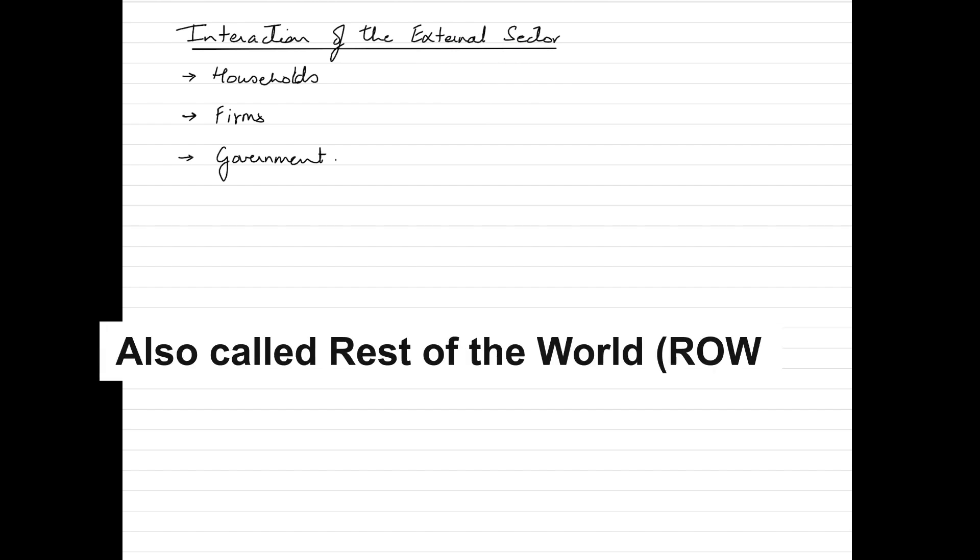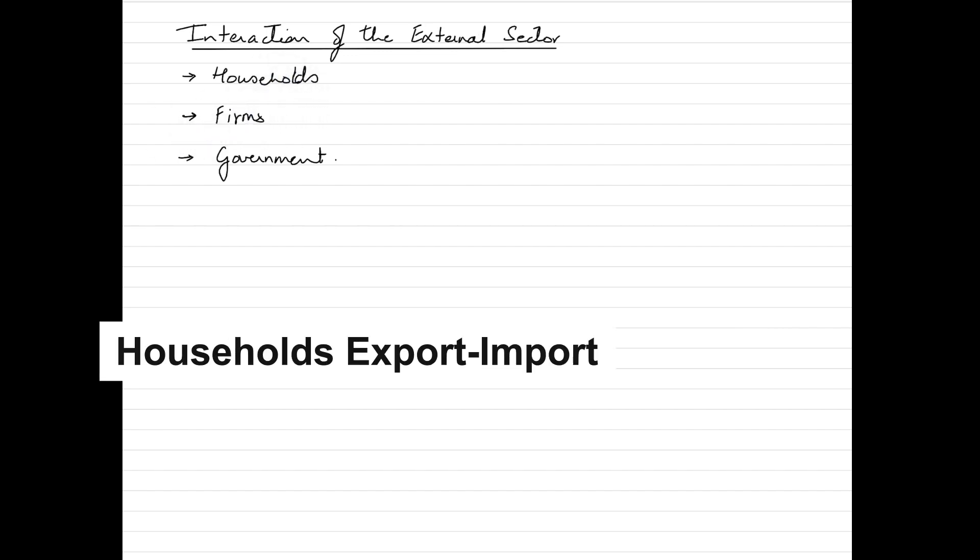The external sector is also referred to as the rest of the world. Households interact with the foreign sector by exporting and importing goods and services. For example, a household might export labor services to a foreign firm by working remotely or by providing consulting services.